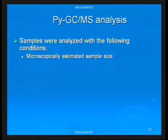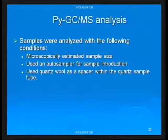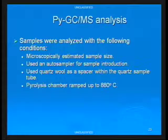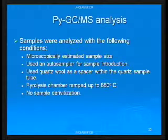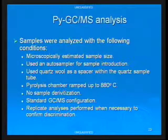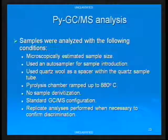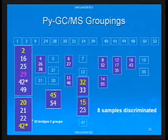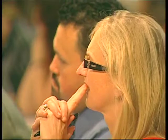For pyrolysis, we estimated sample size without weighing, used an auto sampler and quartz sample tubes with quartz wool as a spacer. The pyrolysis chamber was ramped to 880 degrees Celsius, we did not derivatize samples, and the GC mass spec configuration was standard. Replicate analyses were performed when we discriminated samples to confirm discrimination. After pyrolysis, we were able to discriminate eight more samples. But that's not the end of the story — you're not just looking at each technique as its own entity. You look at the totality of the evidence.